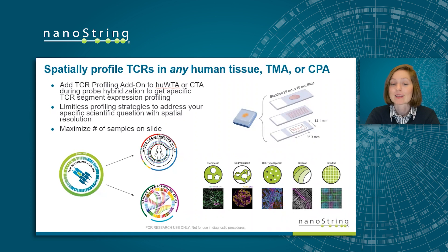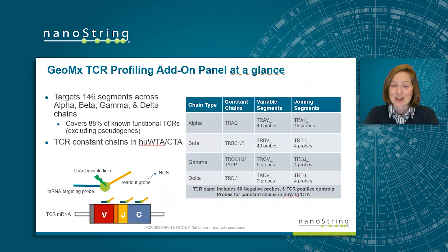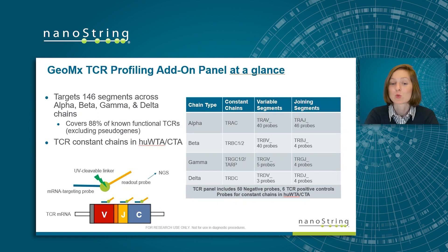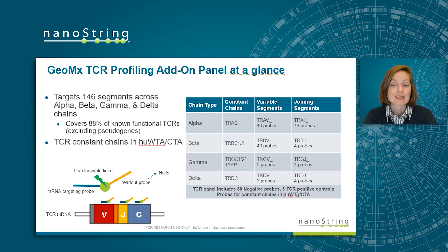You can also get creative with tissue placement and maximize the number of samples on one slide. The GeoMix TCR profiling atom panel at a glance targets 146 TCR segments across the alpha, beta, gamma, and delta chains. There are 40 targets for alpha variable segments, 46 for alpha joining segments, 40 for beta variable, 4 for beta joining, 5 for gamma variable, 4 for gamma joining, 3 for delta variable, and 4 for delta joining. Each probe targets one TCR segment, covering 88% of known functional TCRs excluding pseudogenes. The panel also contains 50 negative probes and 6 TCR positive controls to give you confidence in your data. Probes targeting the constant chains for TCR are found in the human WTA or CTA panels.